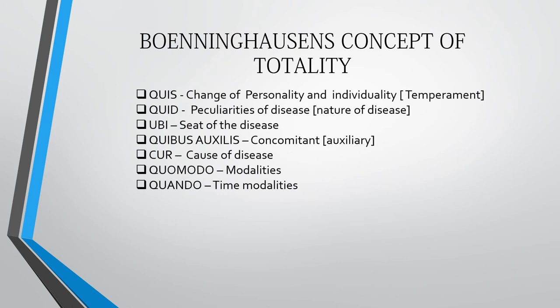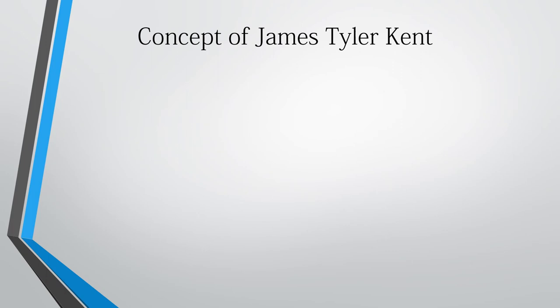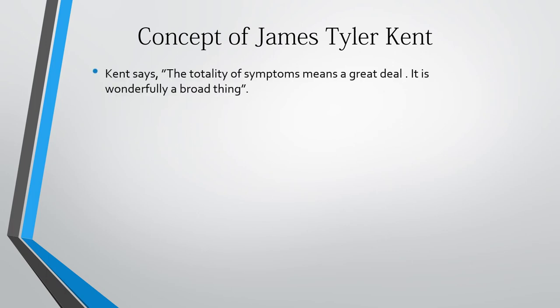The seven categories of Boenninghausen's concept are: Quid — change of personality and individuality; Quale — peculiarities of disease; Ubi — seat of the disease; Quibus Auxiliis — concomitants; Causa — cause of disease; Quomodo — modalities; and Quando — time modalities.